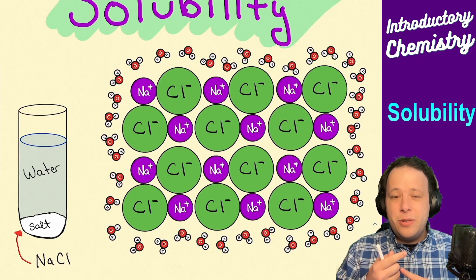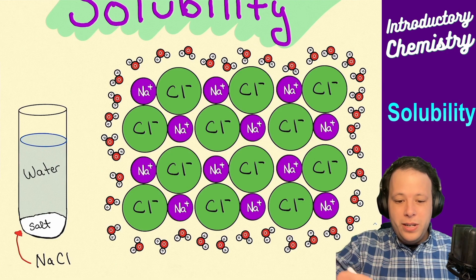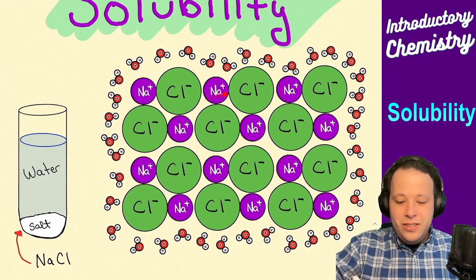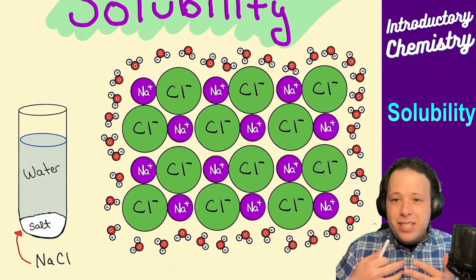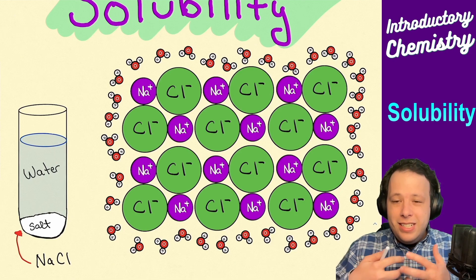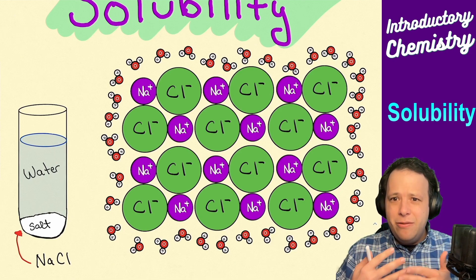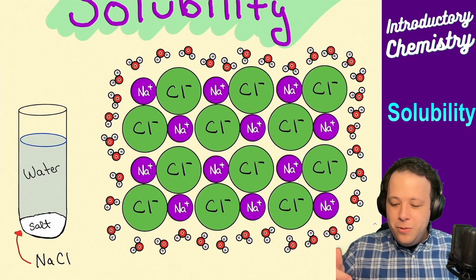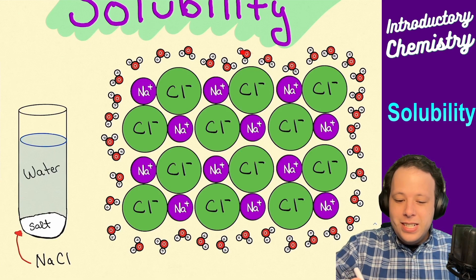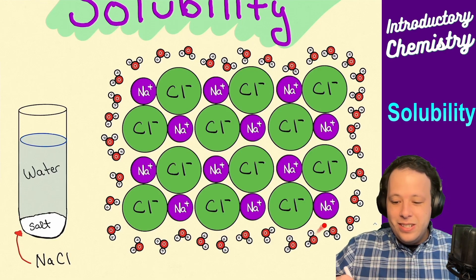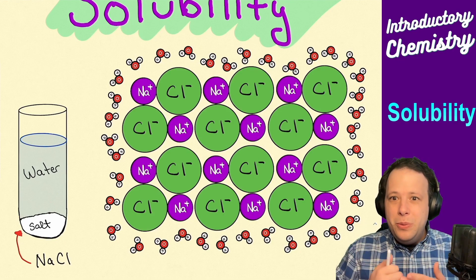You have sodium ions and chloride ions, and the way they're oriented is in a lattice. How does it dissolve? What is happening — especially when you put hundreds and thousands of water molecules all around it? What are we seeing?